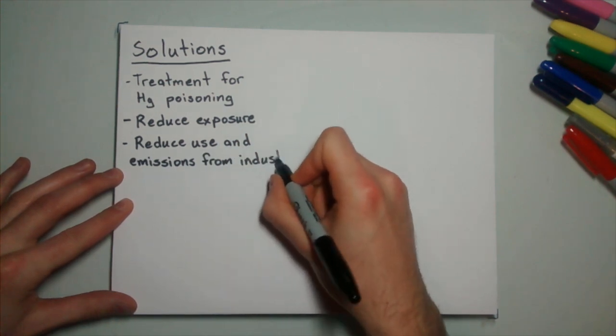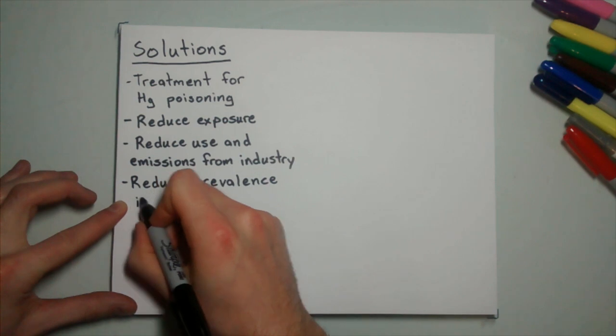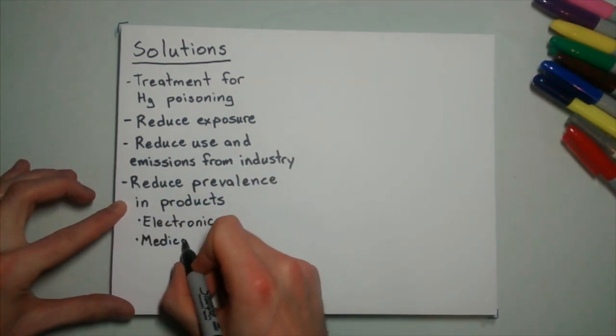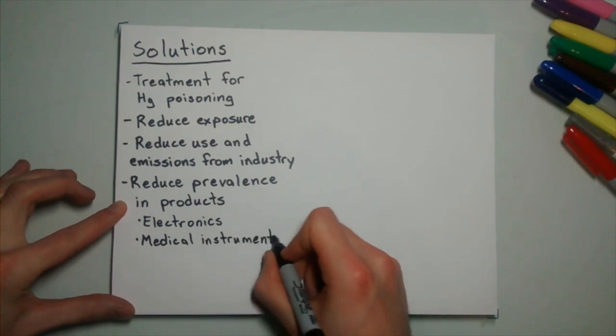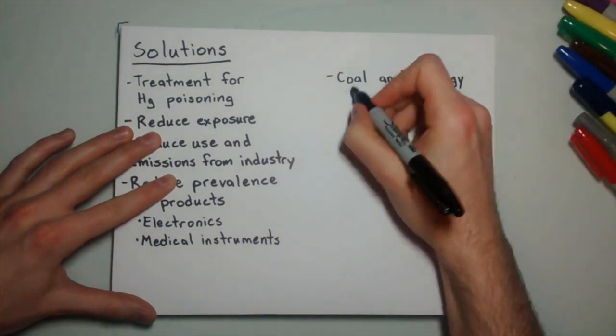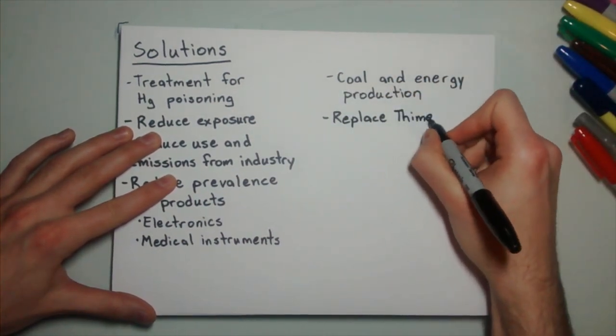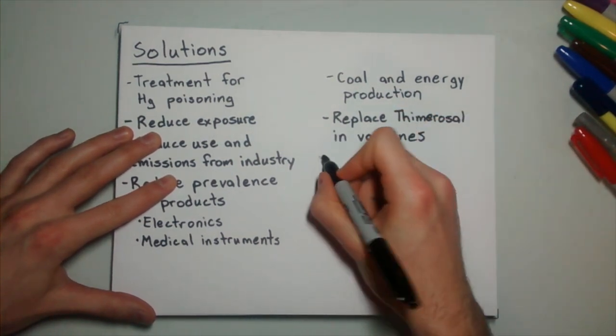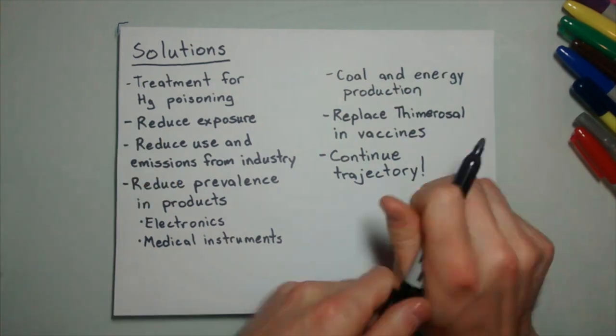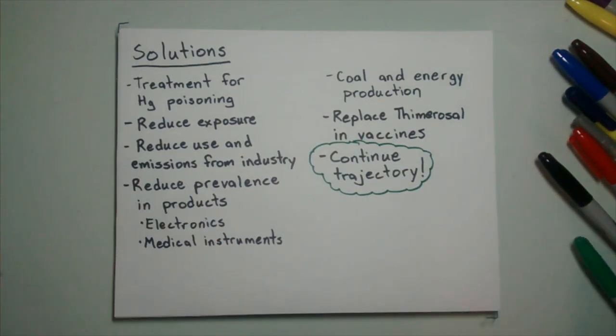Another important step is to reduce mercury emissions. This involves reducing its use in industrial processes and manufacturing like smelting, concrete production, and iron and steel production. We also need to reduce its prevalence and concentrations in products such as electronics, medical instruments, and vaccine preservatives like thimerosal. We can also find a replacement for coal in the production of energy, or at least use coal that contains low levels of mercury. However, we have already made progress in decreasing air and water emissions, so we can continue on our current trajectory.